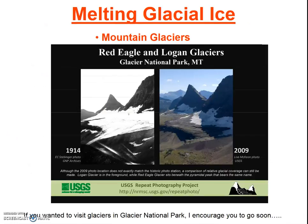Some glacial ice exists on mountain tops, not as continental ice sheets. Seasonal meltwater from glacial ice in the Andes and in the Himalayas is a vital water source for many South American and South Asian countries. What happens when those glaciers are gone?